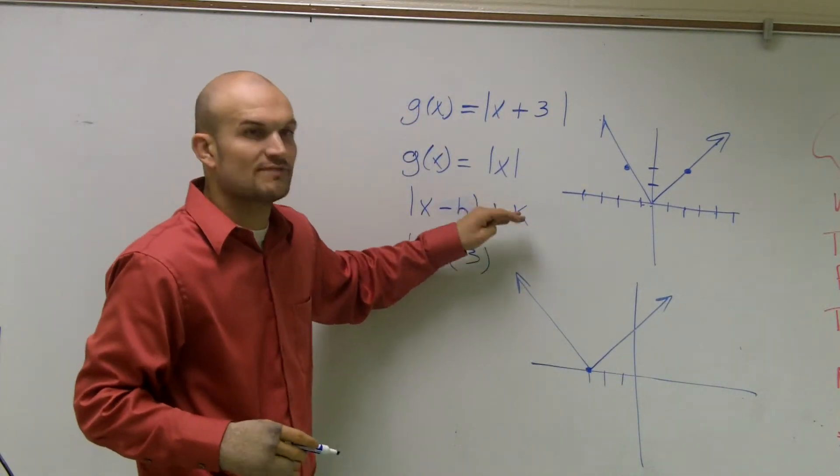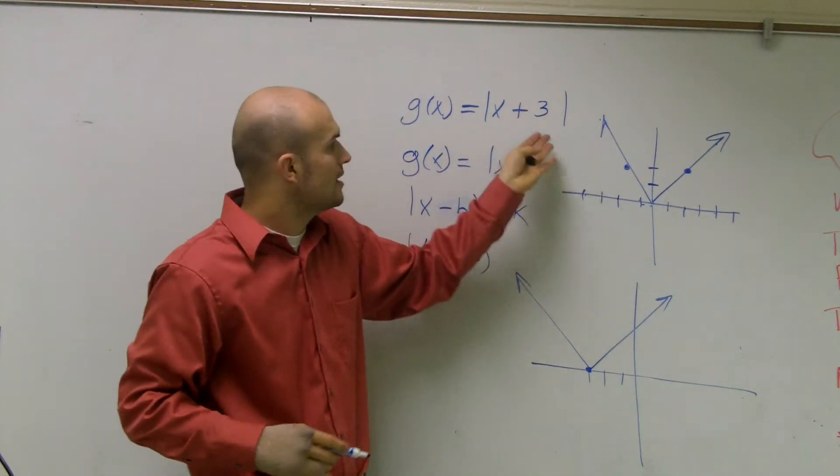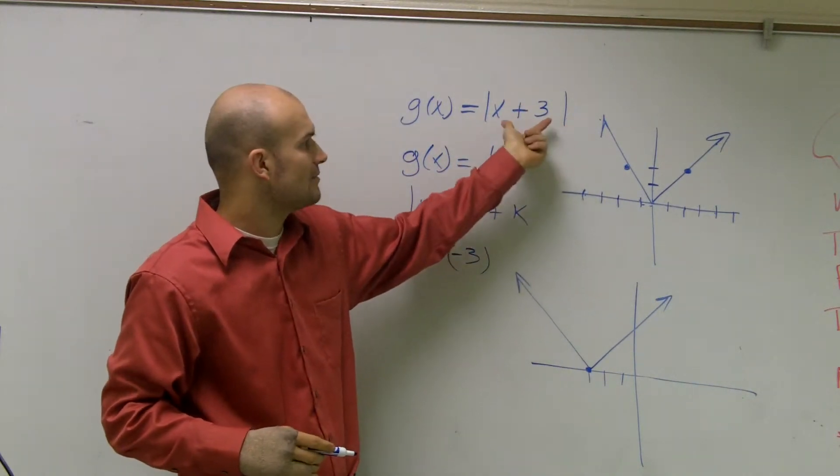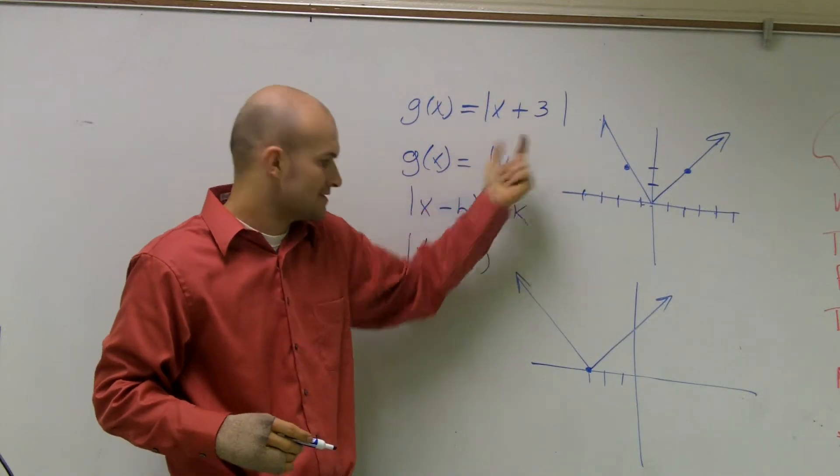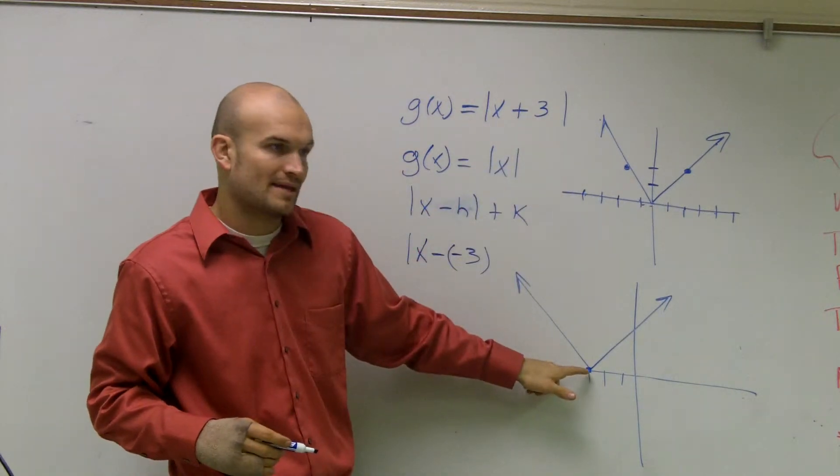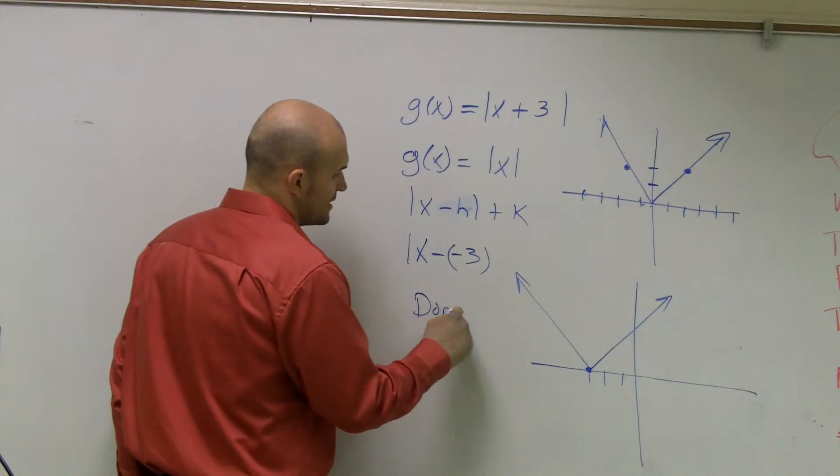Then k tells me to shift my graph up or down. And if I look at this equation, I don't have a k. All I have is my shifting 3 units to the left. So therefore, my graph is going to remain this value.